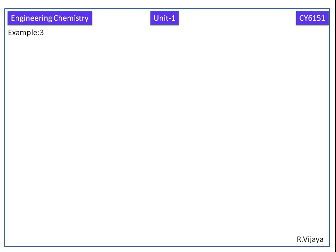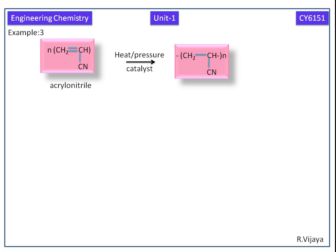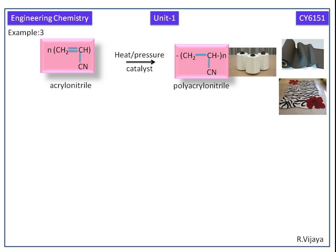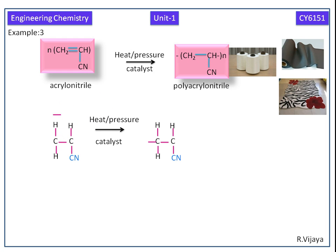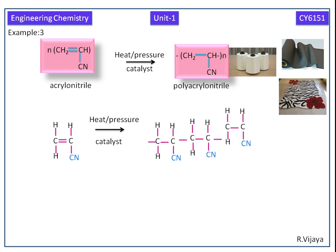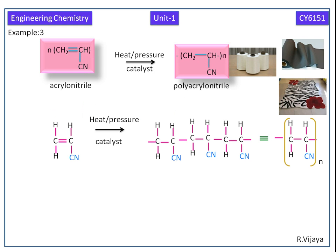Next we see the third example. N number of acrylonitrile undergoes polymerization. Here we can see how the polymer is produced from N number of acrylonitrile. The simple structural form is –(CH₂–CHCl)–n times.